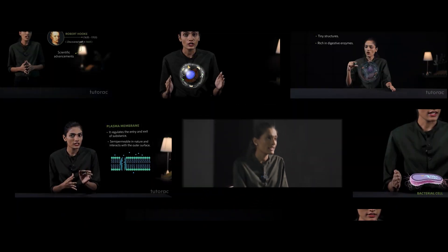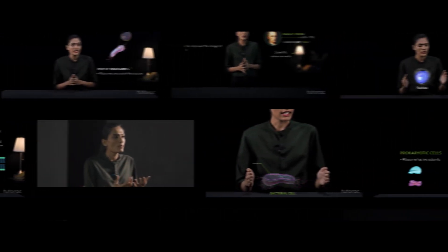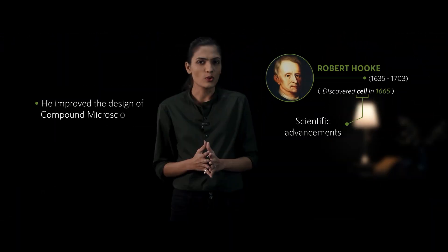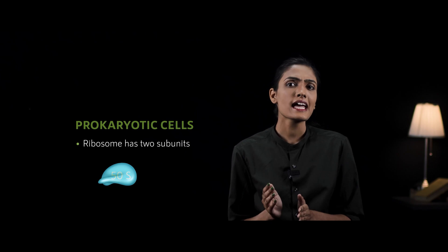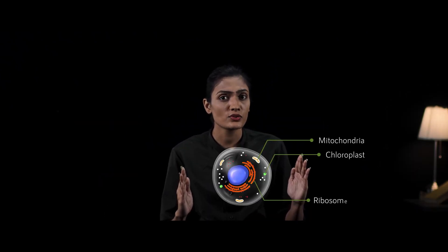We will start this course with the history of cell, where you will get to know about how the cell came into existence. Further, you will be enhancing your knowledge with the two types of cell — prokaryotic cell and eukaryotic cell — and of course their structure. And trust me, you will be able to distinguish these two with accurate examples.